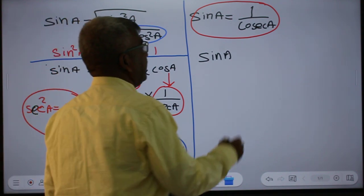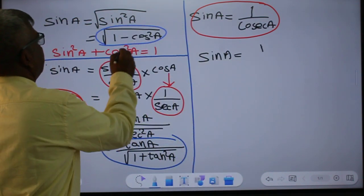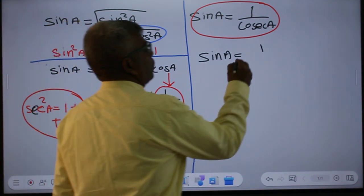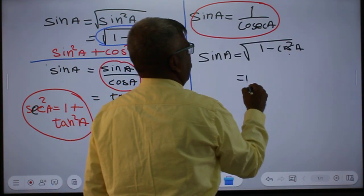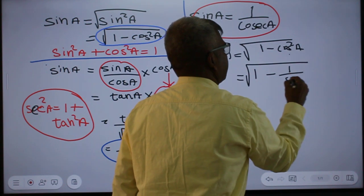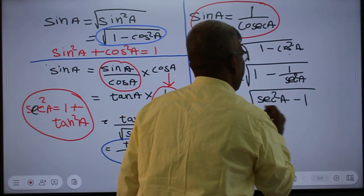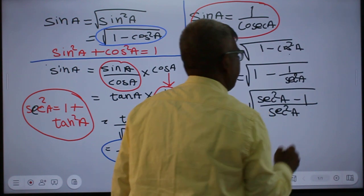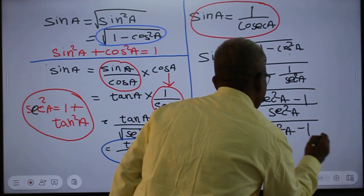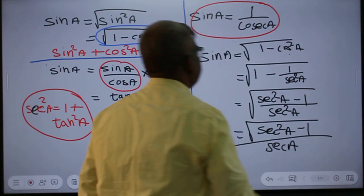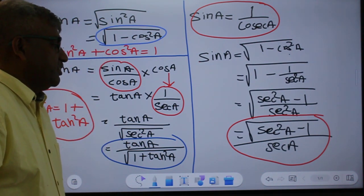Then sin A will be expressed in terms of secant A. Sin A is equal to the square root of 1 minus cos squared A. Now substituting cos A equals 1 over secant A, we get sin A equals square root of secant squared A minus 1, all over secant A. This is sin A expressed in terms of secant A.